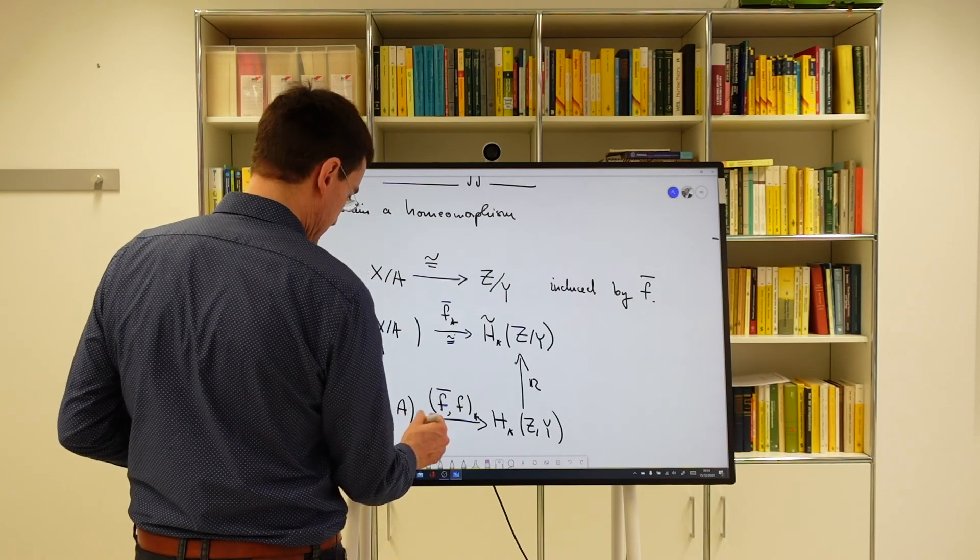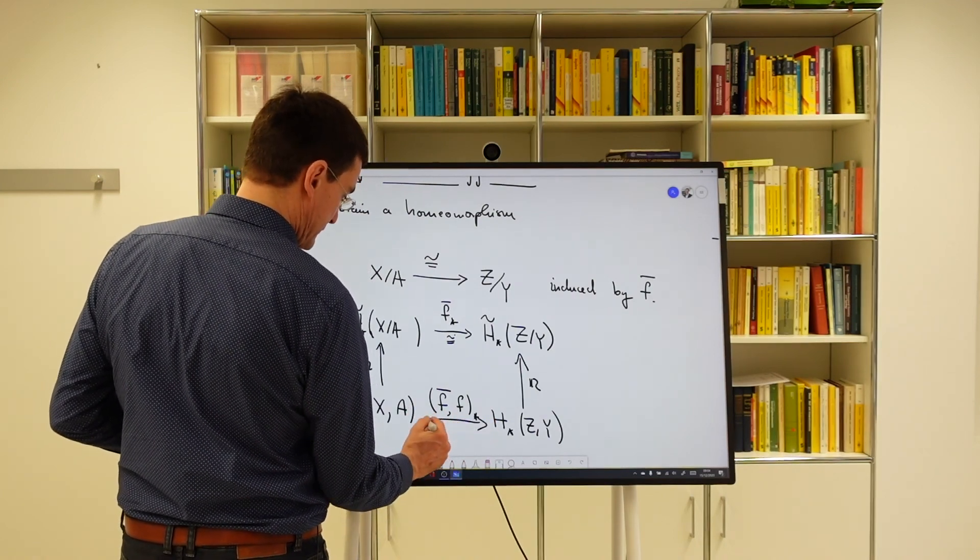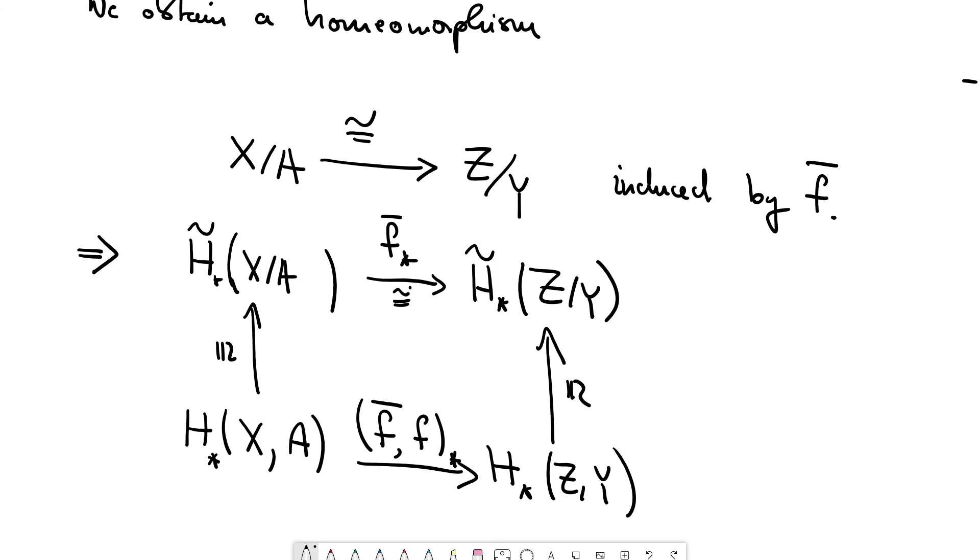And we obtain that the map here, the map we wanted to look at, is indeed an isomorphism.